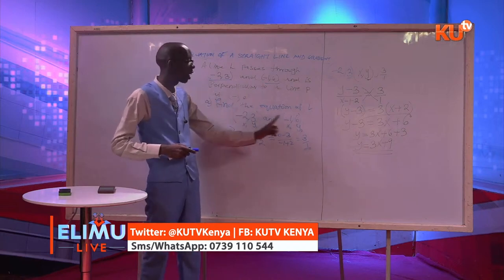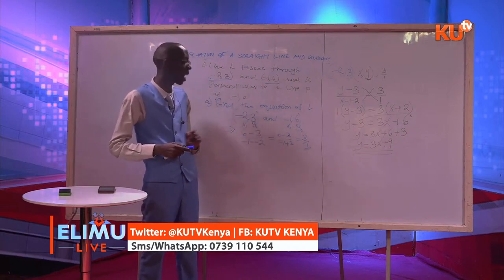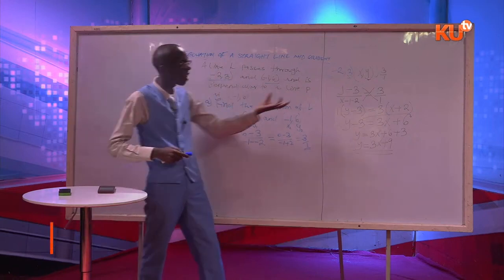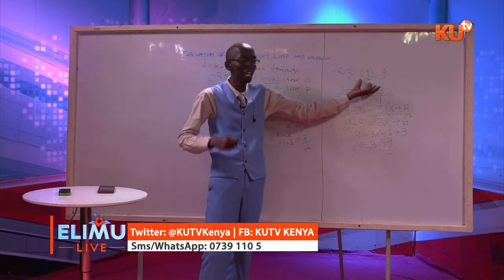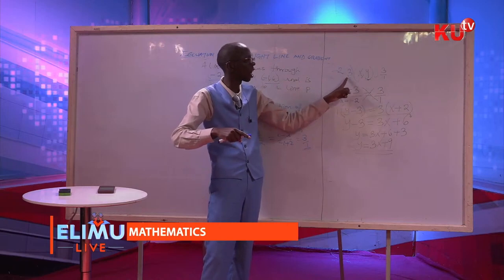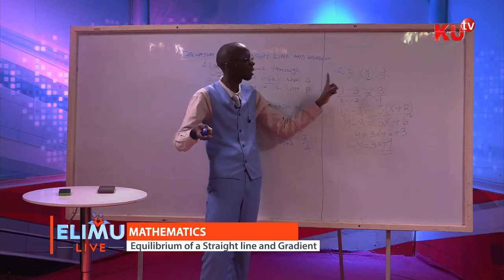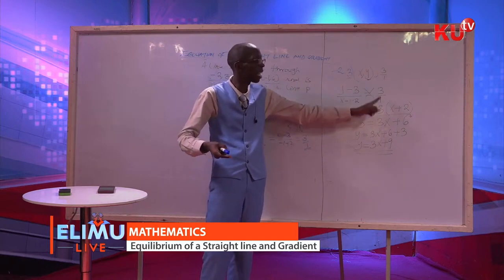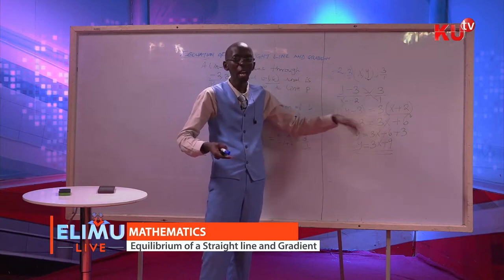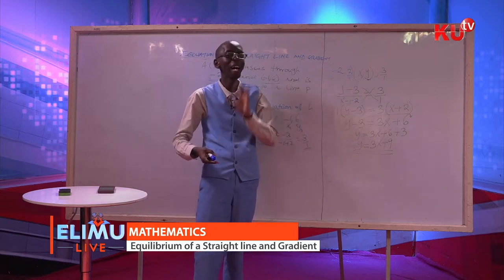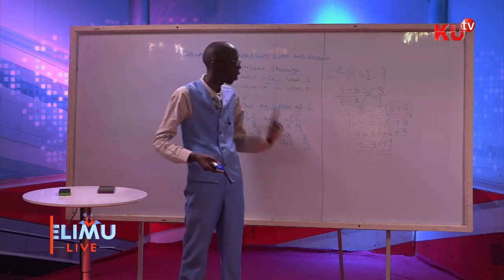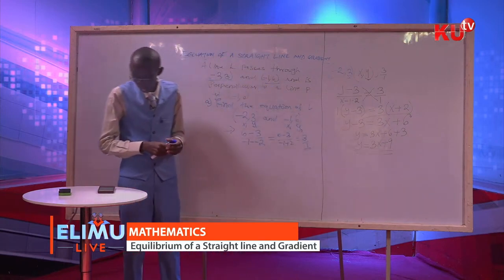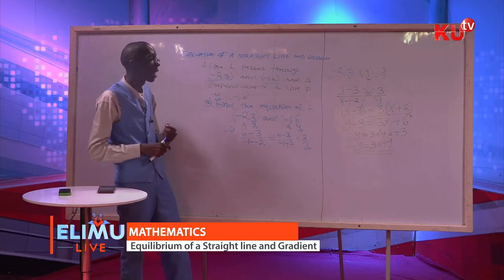The gradient is Y1 over changing X, X2 minus X1. After getting the gradient, pick one of the points given under general point X, Y. Take changing Y: Y minus 3 over changing X, X minus negative 2, is equal to the gradient which is 3 over 1. Cross-multiply, open the bracket and get your equation in the form Y is equal to MX plus C, which will give us Y is equal to 3X plus 9.